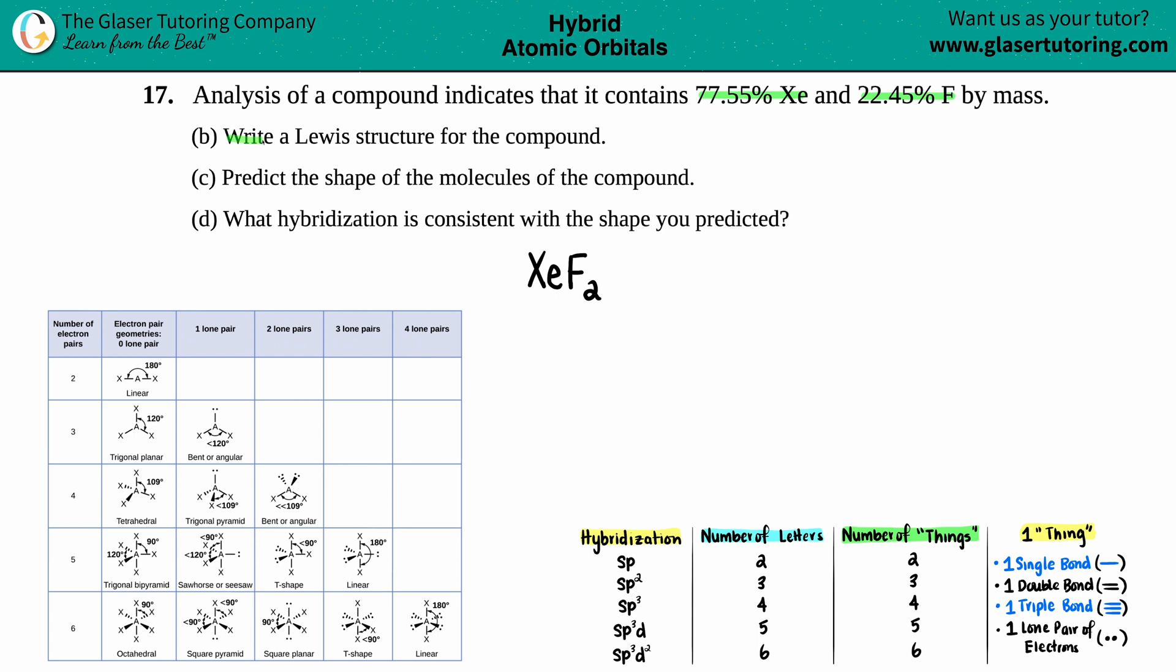Letter B just says we have to write a Lewis structure for the compound. Now if you notice, there's no letter A here because letter A, which was the last video, was to find out the empirical formula between these two percents. So if you want to go back and figure out why this compound is XeF2, go for it. But now we're just going to write the Lewis structure for this.